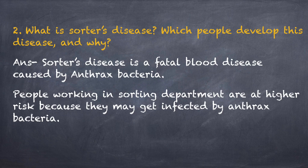Question 2: What is Sorter's disease? Which people developed this disease and why? Answer: Sorter's disease is a fatal blood disease caused by anthrax bacteria. People working in the sorting department of wool are at higher risk because they may get infected by anthrax bacteria.